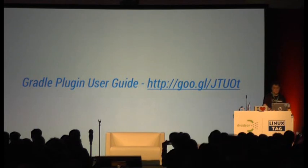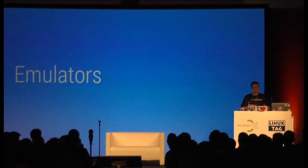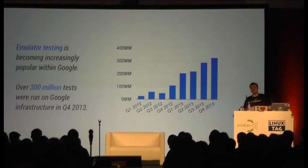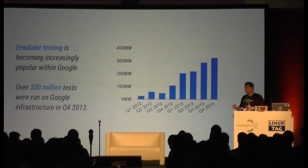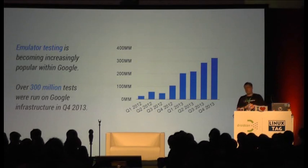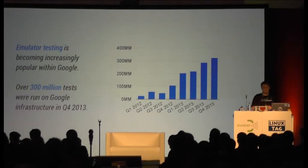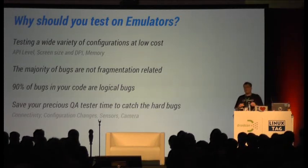The next thing I want to talk about is emulators. When I talk about emulators for testing to developers, one thing I often hear is 'I cannot use an emulator for testing because I can't really catch the hardware bugs.' But if you look at how Google teams test internally, you'll notice that emulator testing is becoming increasingly popular. Looking at the chart on the right, it shows actual test runs on Google infrastructure on emulators from 2012 to 2013 — in Q4 we ran over 300 million tests. Our engineers are using emulator testing more and more, because it allows you to test a wide variety of bugs at a relatively low cost — for certain API levels, responsive design across different layouts, or memory issues.